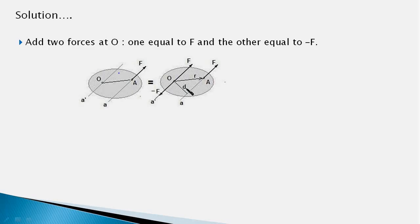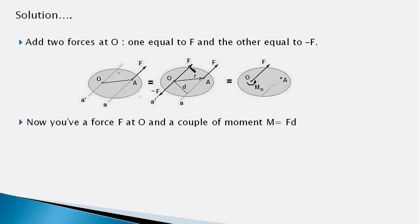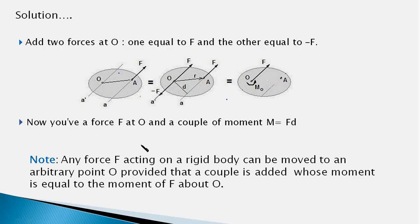Now take a careful look at these three forces, and you would notice that the minus F force acting at point O and F acting at point A form a couple. So what we are left with is a force acting at O and a couple with a moment MO. This MO would be equal to the force magnitude multiplied by the perpendicular distance between the lines of action of the two forces forming the couple. So the conclusion is that any force F acting on a rigid body can be moved to an arbitrary point O, provided that a couple is added whose moment is equal to the moment of F about O.